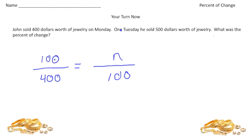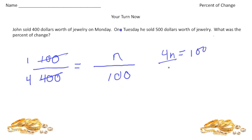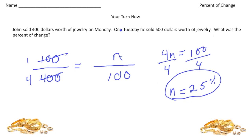Here's a little trick to make this easier. We could do 100 times 100 equals 400 times n, but notice we can reduce the fraction 100/400 down to 1/4. So now we know 4 times n equals 100, because 1 times 100 is 100. Dividing both sides by 4, we get 25. So John had a 25% increase from Monday to Tuesday in his sales.